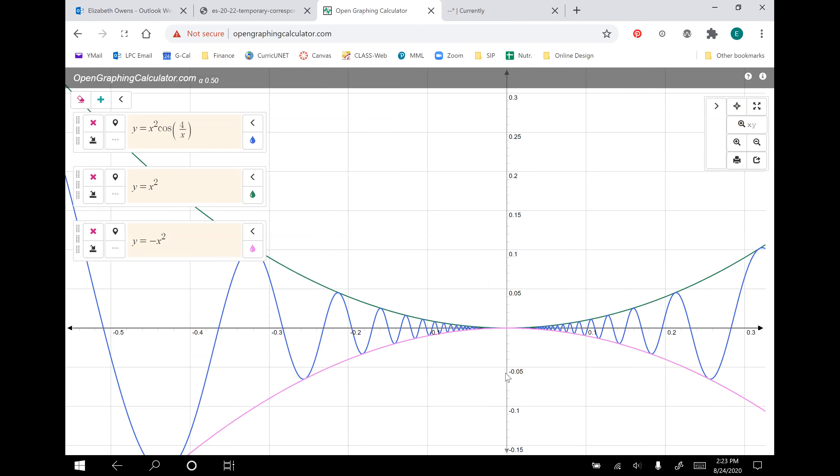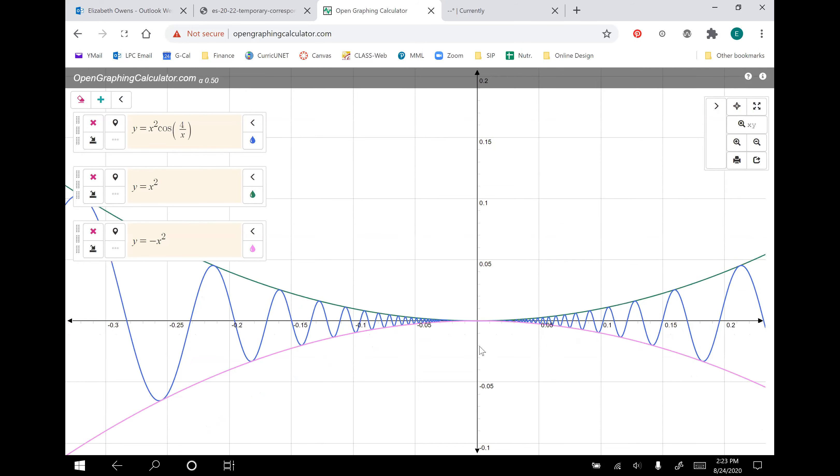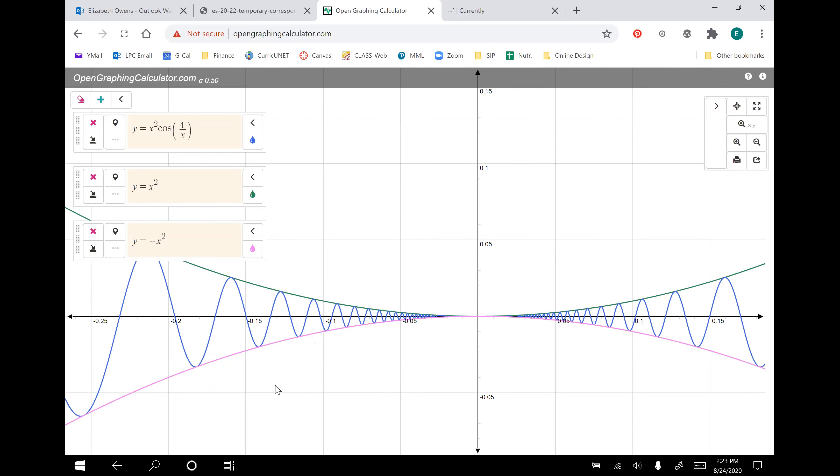And those two outer functions, the parabolas, both have a limit of zero. So their y values are approaching zero. They even meet up in the middle there. And since f of x, the cosine function, is oscillating but stuck between those two parabolas, when those two parabolas both go to zero at the same time, they both approach a limit of zero, the cosine function has nowhere else to go. It gets smashed or squeezed into that sandwich and it has to have a limit of zero. So there's the sandwich theorem at work.